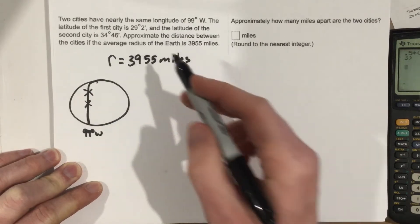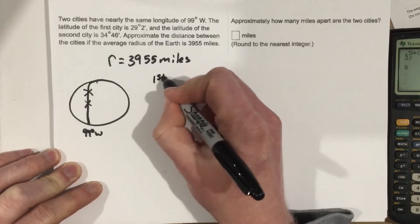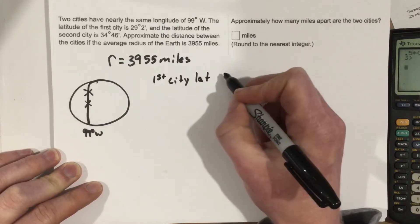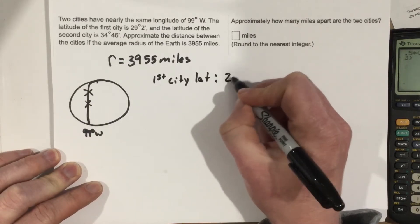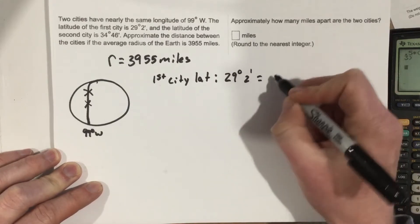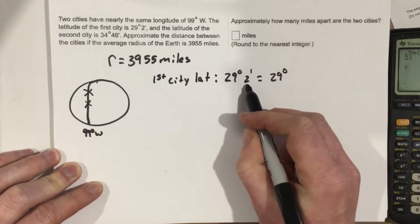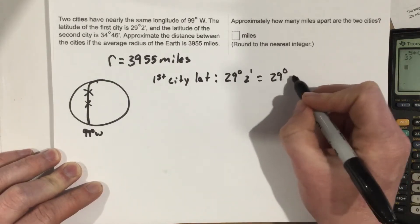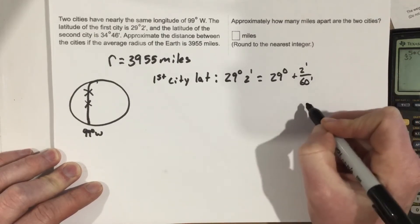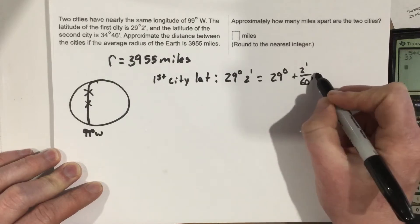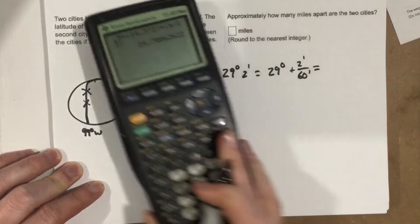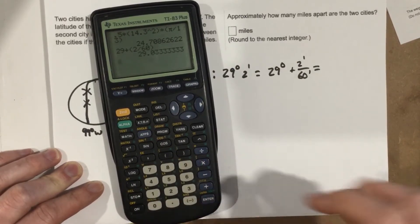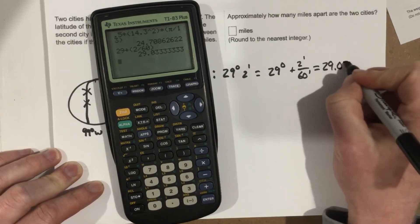The first step is to take our first city's latitude and convert it. So 29 degrees 2 minutes equals 29 degrees plus 2 minutes over 60 minutes, because there are 60 minutes in a degree. Plugging that into the calculator: 29 plus 2 divided by 60 gives us 29.0333 degrees.